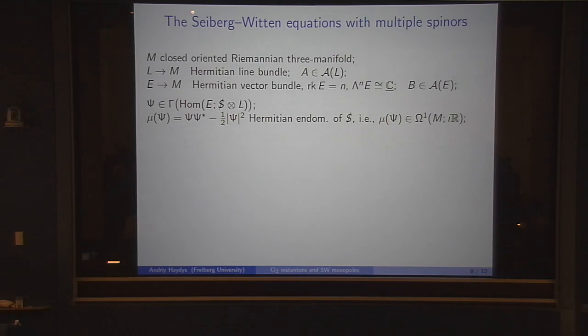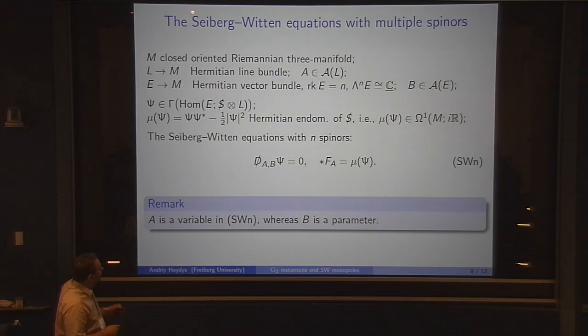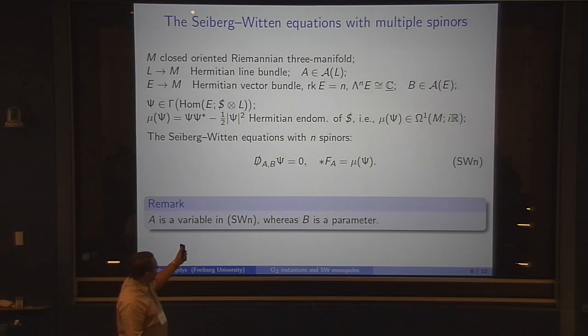Psi is now an analog of the spinor in the classical Seiberg-Witten theory. This is interpreted as a homomorphism from E into the spin-C spinor bundle. You can imagine that E is trivialized. Then from Psi and the spinor, we can cook up a one-form. If you take this combination, this is a Hermitian endomorphism of the spinor bundle. Such an endomorphism can be identified with a one-form with values in imaginary numbers. We can study the following equations: we require that Psi is harmonic and that the curvature equals the one-form we have constructed before.